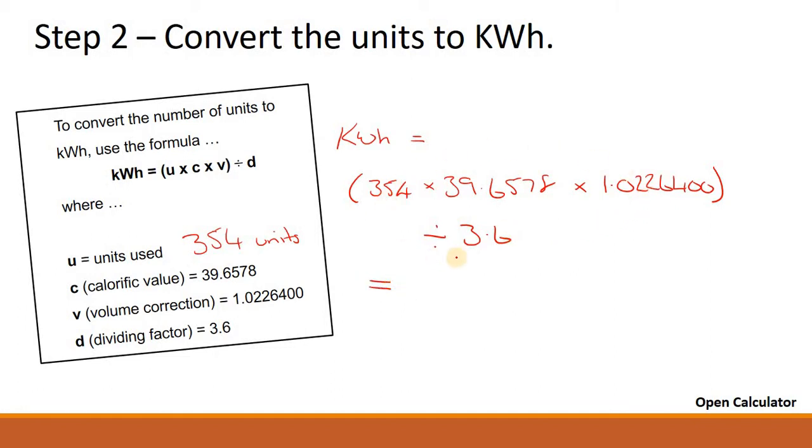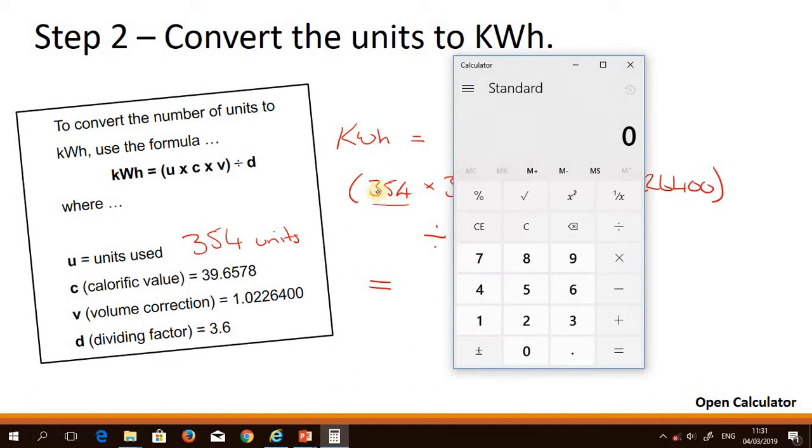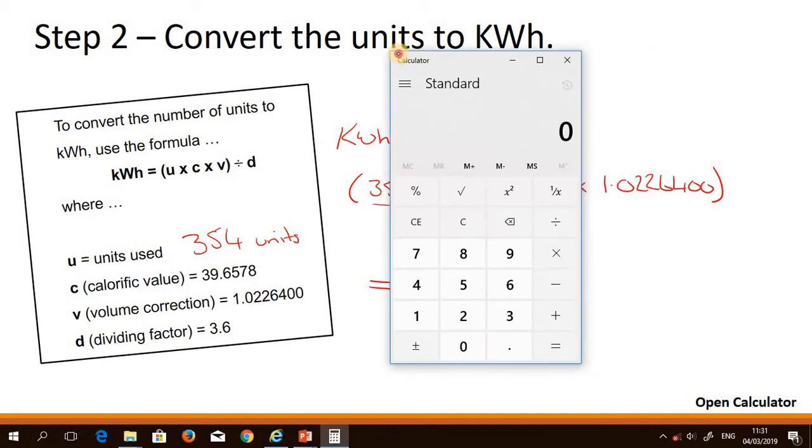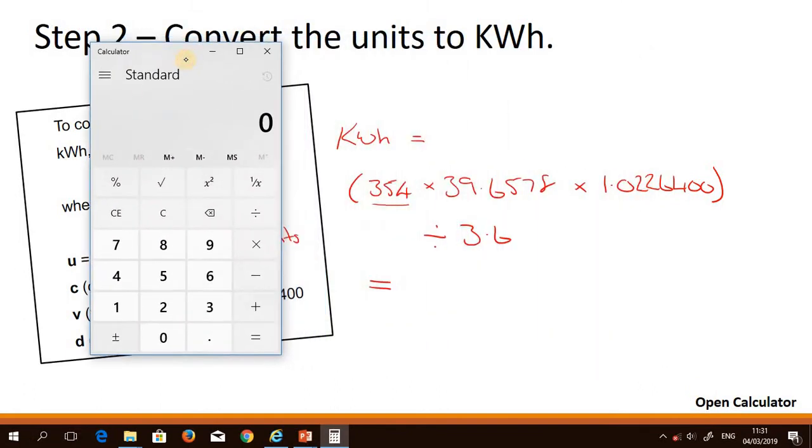So by doing this sum, we will convert this number of units into kilowatt hours. So again, let's open our calculator and we'll do that sum. So 354 multiplied by 39.6578, multiplied by 1.0226400, equals—so that's those bits that are in the brackets.